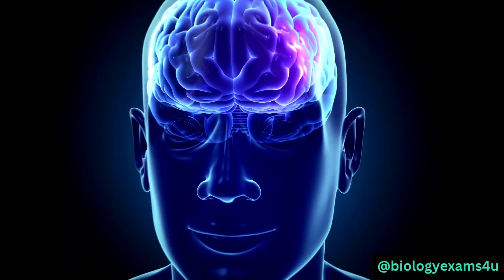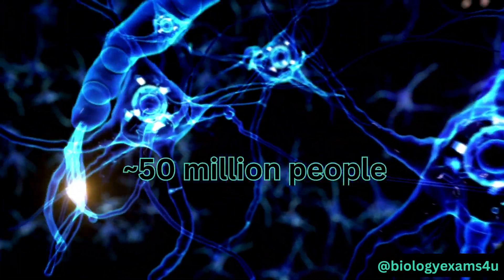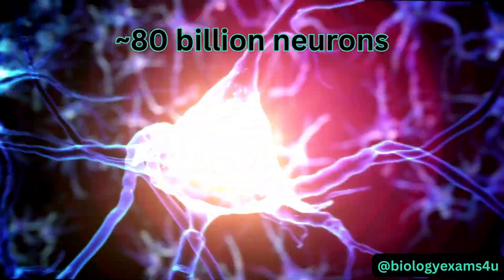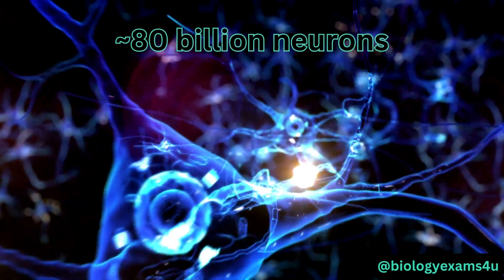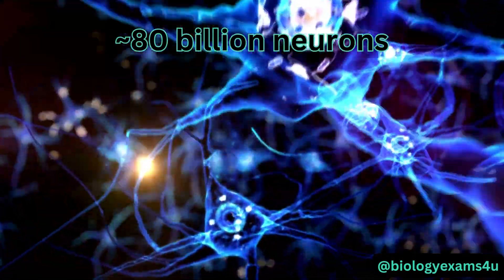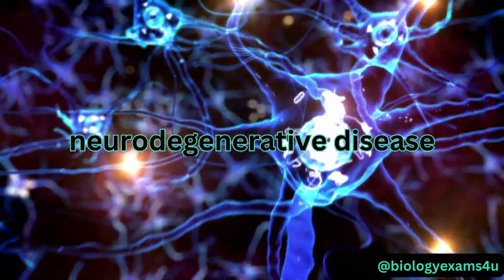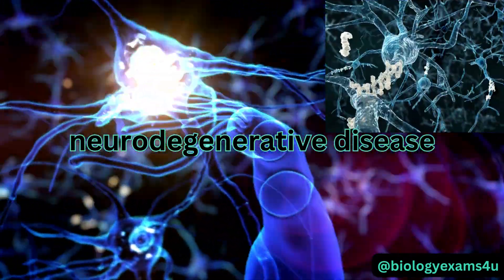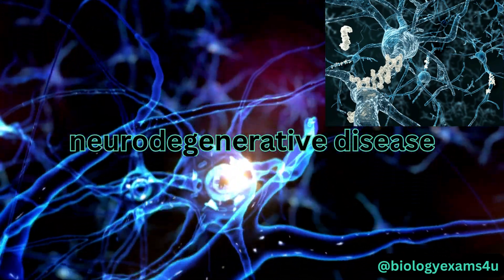Alzheimer's is a chronic, progressive, neurodegenerative disease that affects at least 50 million people worldwide. Our brain is made up of billions of nerve cells called neurons that are always communicating with each other. The word neurodegeneration describes any disease that causes neurons to weaken and eventually die. Alzheimer's disease is thought to be caused by the abnormal buildup of proteins in and around brain cells.